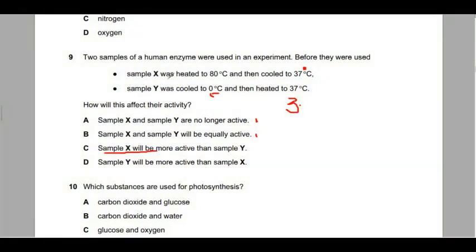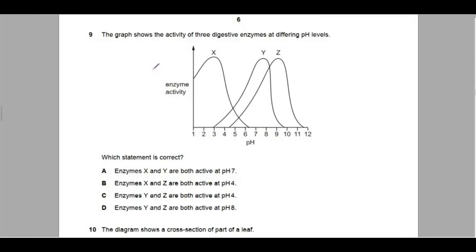Sample Y will be more active than sample X is correct. We can see that sample Y was cooled down to zero degrees but then heated back to 37 degrees, which of course is the optimum temperature for enzyme-controlled reactions in the human body. The optimum temperature for enzyme-controlled reactions in the human body is 37 degrees Celsius. So our answer here is Y.